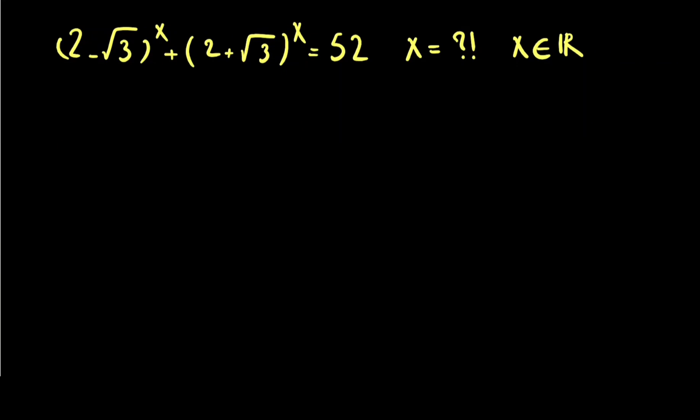Welcome to MassWeedMarket. Today I'm going to solve a really nice problem from the Chinese Math Olympiad. If I have (2 minus the square root of 3) to the power of x plus (2 plus the square root of 3) to the power of x equals 52, we want to find x, and we know that x is a real number.